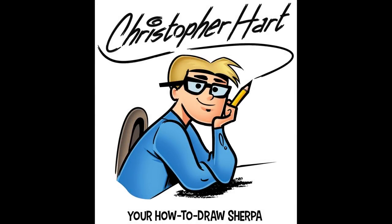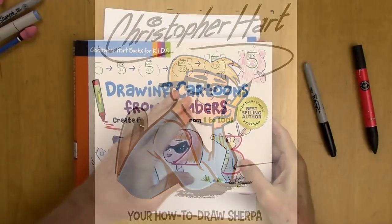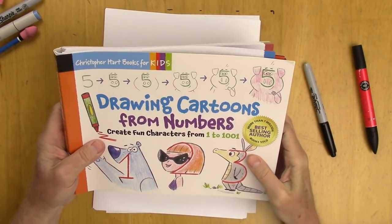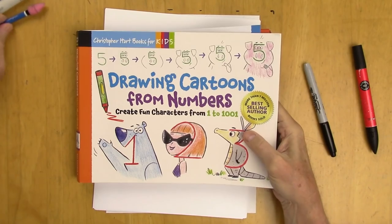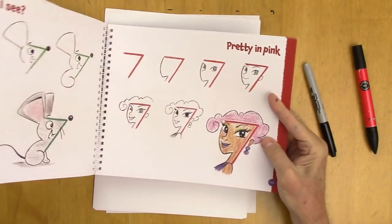Hi, my name is Christopher Hart. I'm the author of many books, including this one on how to draw cartoons. This is Drawing Cartoons from Numbers: Create Fun Characters from One to a Thousand and One. In it, we go step by step to create a cartoon character, starting off just with the number and ending up with a full-blown cartoon character each time.